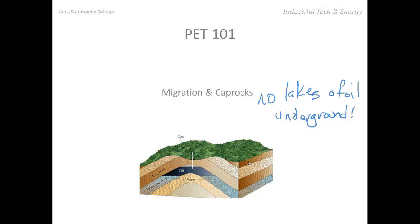In fact, it's salt water — what they call connate water — meaning this is water that was captured at the same time as the oil and gas, and it all migrated upward together.